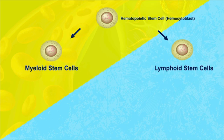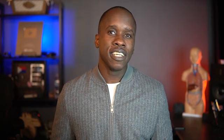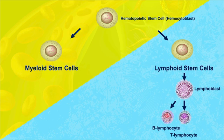The lymphoid stem cells will give rise to lymphoblasts — which, as you should understand by now, are precursor cells to lymphocytes. They can become B and T lymphocytes, also known as B cells and T cells, or they can become natural killer cells.